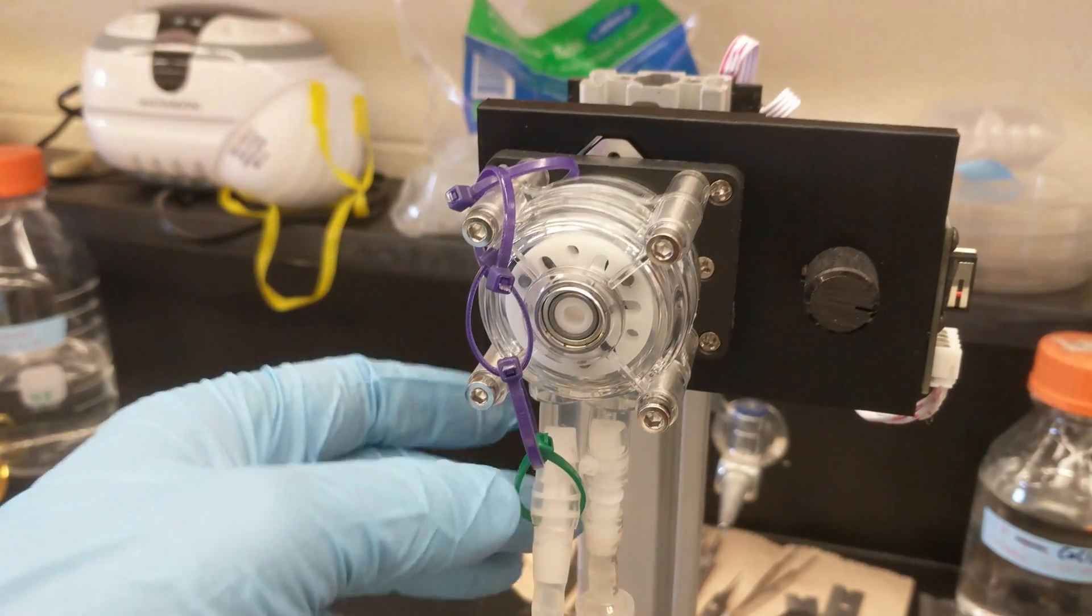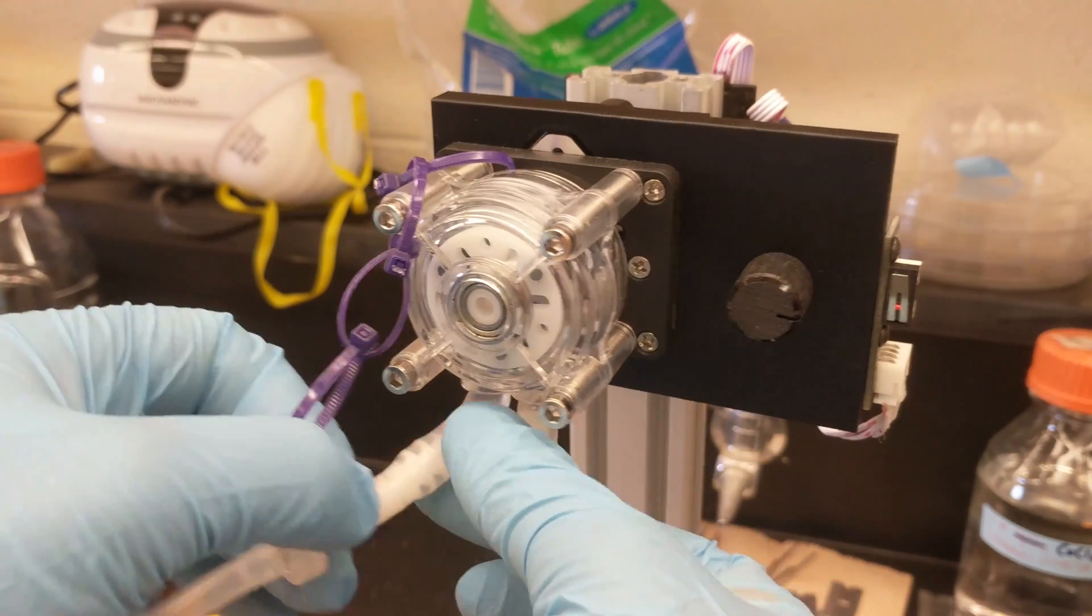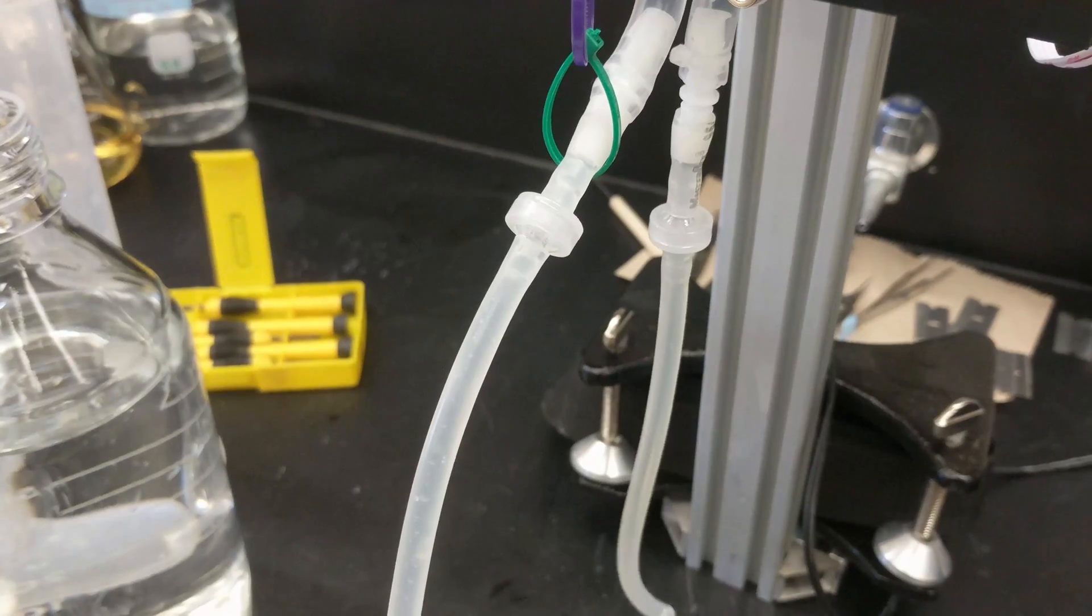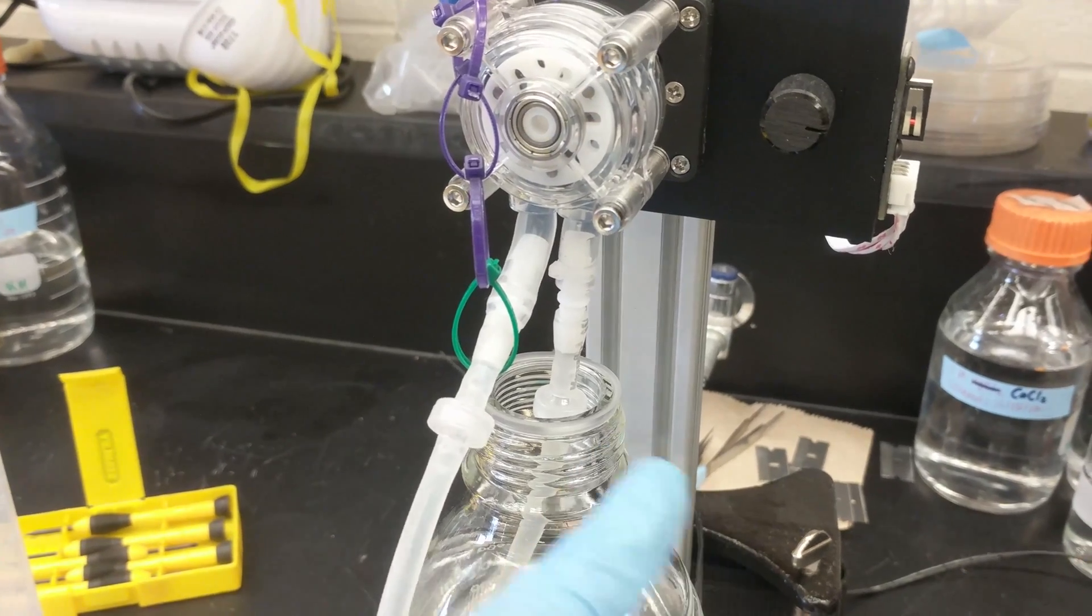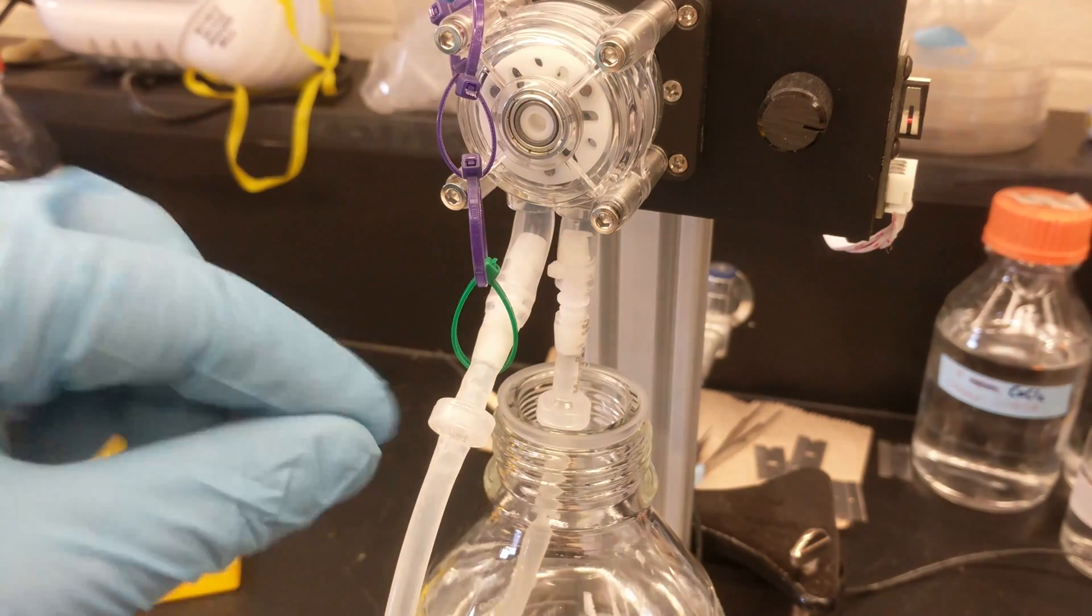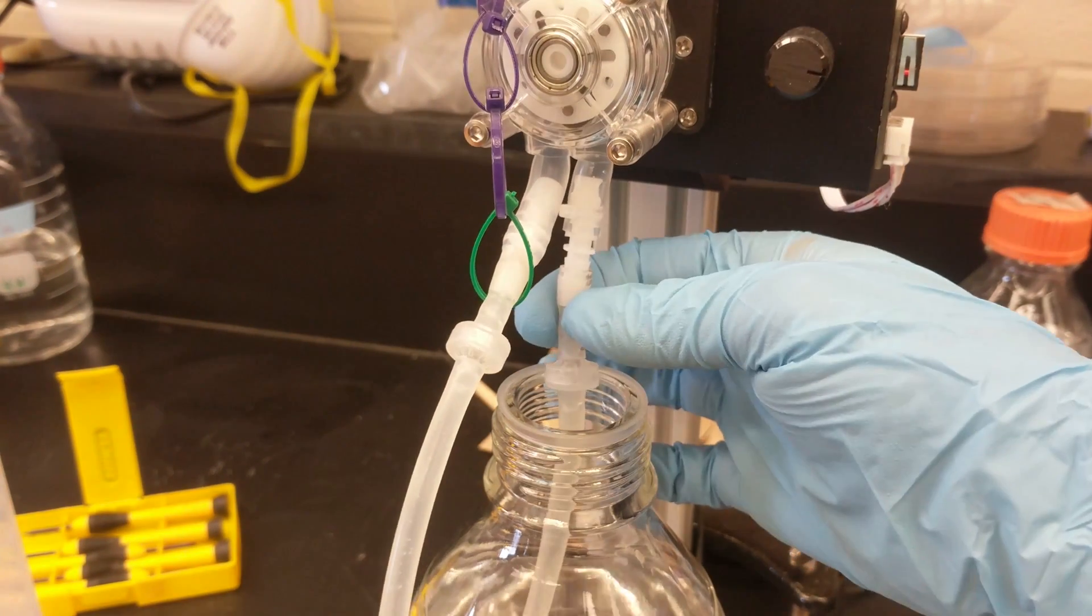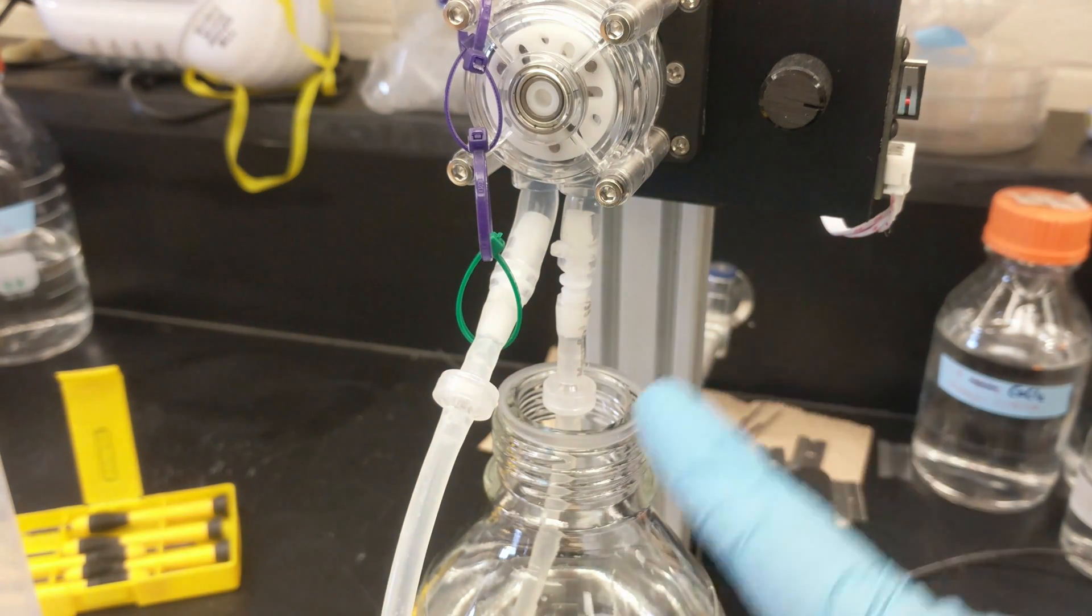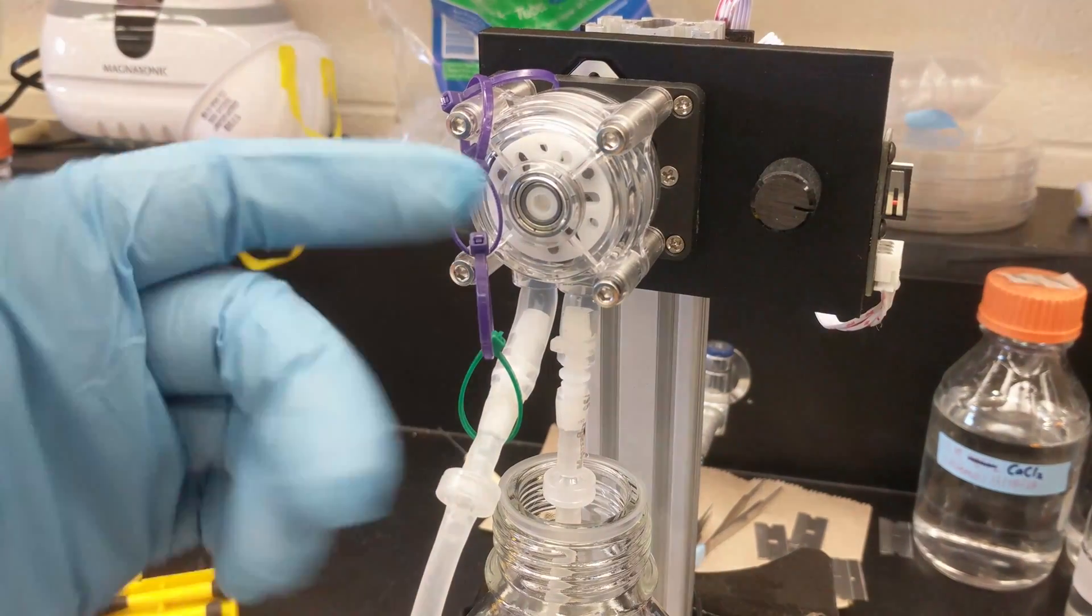And this little daisy chain of zip ties is literally just to support the arm, the output of the peristaltic pump. What I've noticed is that the pump performs a lot better and there's a lot less air in the system if you put two one-way check valves on the input and one on the output of the pump.